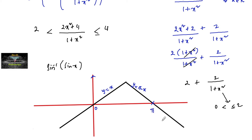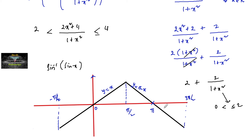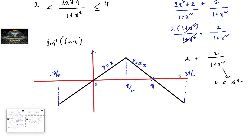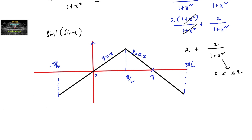At x=π, sin⁻¹(sin x) is 0, and the value from π/2 — this is minus π/2. From −π/2 to +π/2, sin⁻¹(sin x) equals x, and beyond that it equals π−x. There is a horizontal line at y=π−3.